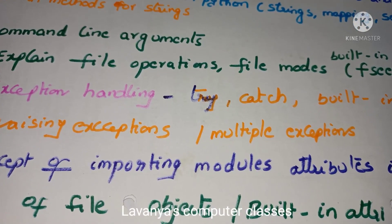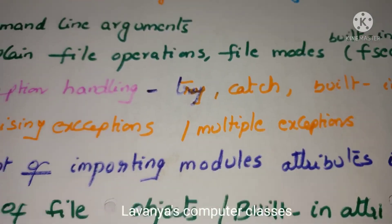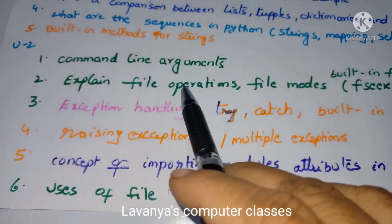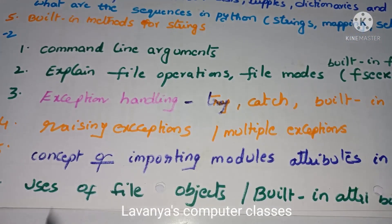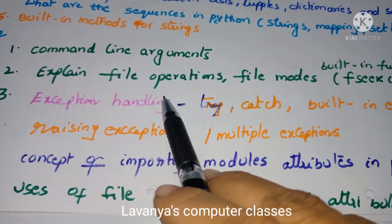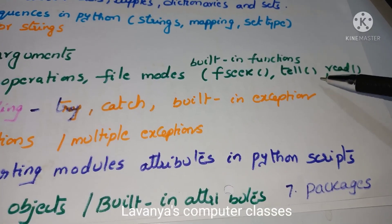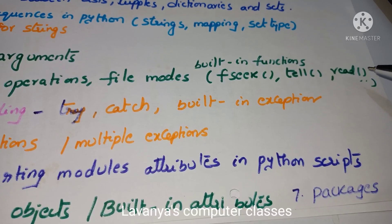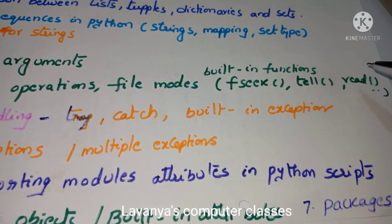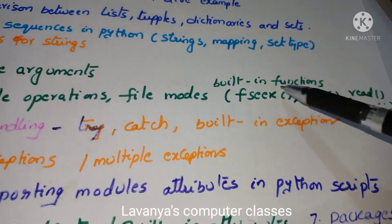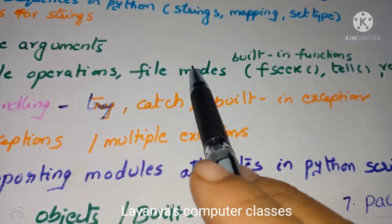In Unit 2, there are more built-in functions, files, and exceptions. Exceptions are very important. The first important question is: explain about command line arguments. The second is: what is a file and what are the file operations — such as seek function, tell function, read function, and so on — how to open a file, how to read and write commands in a file. Also read about file modes: how we open a file in different modes.